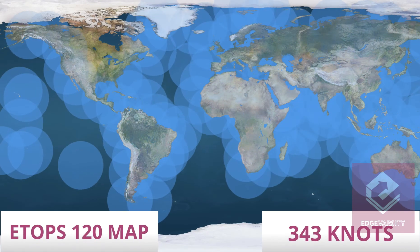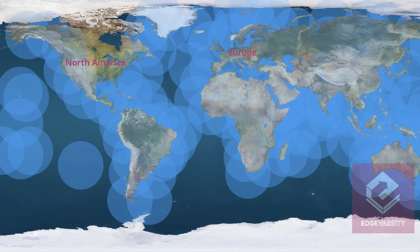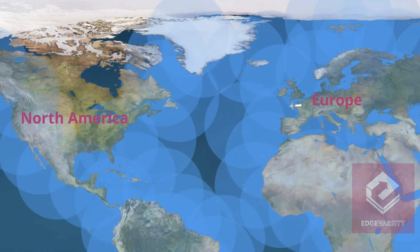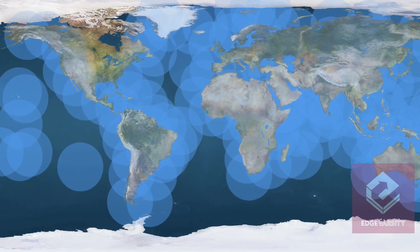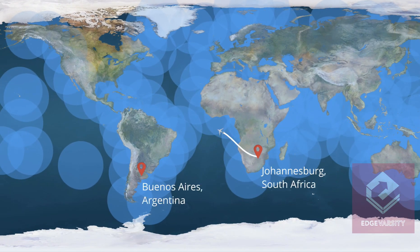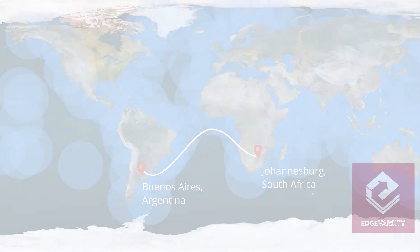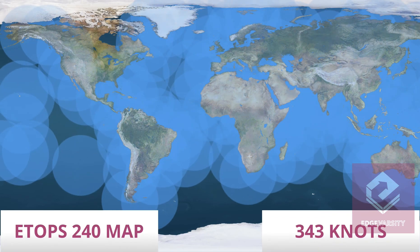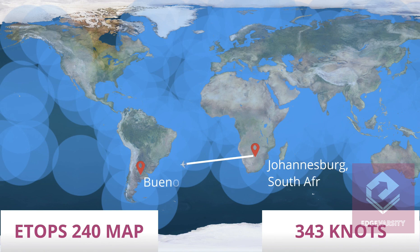Similarly, the ETOPS 120 map would look like this. As you can very well see, ETOPS 120 creates a direct flight path from Europe to North America over the Atlantic Ocean. However, the flight path from Johannesburg to Buenos Aires would continue to be a bit longer. With ETOPS 240, the globe is more or less covered, and we can fly direct even from Johannesburg to Buenos Aires as shown.